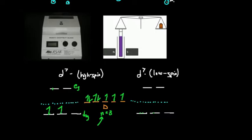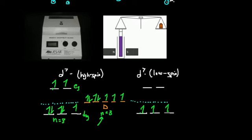Let's fill in these orbitals according to whether they're high spin or low spin for the d7 case. For high spin, filling gives n equal to 3 — three unpaired electrons. For low spin, we stay low as long as possible and then place the final electron in e_g, giving n equal to 1, just one unpaired electron.